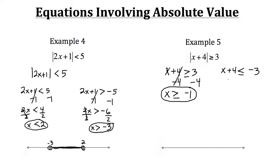Now for the other one, we again just need to get rid of the 4 and do the same thing to the other side. That leaves us with x being less than or equal to negative 7, because negative 3 minus 4 is negative 7.